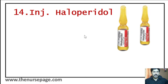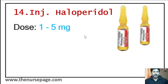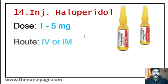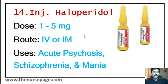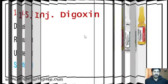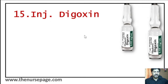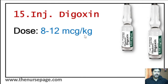Fourteenth injection is haloperidol. Dose is 1 to 5 milligram. Route of administration is intravenous or intramuscular. Indications include acute psychosis, schizophrenia, and mania.